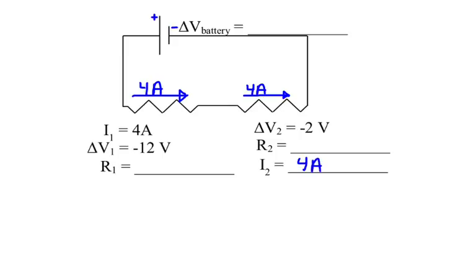There's nowhere else for it to go. If there was another wire branching off, the current wouldn't be 4 amps — it would be 4 amps minus whatever current went through the second wire. But since there's no second wire, the current will be the same. You might say those two resistors are in series; if they're in series, they have the same current.